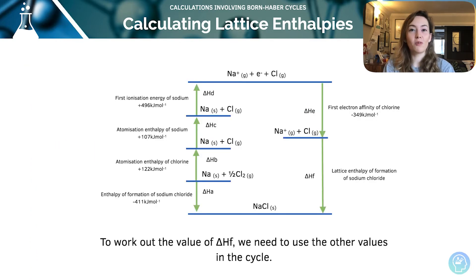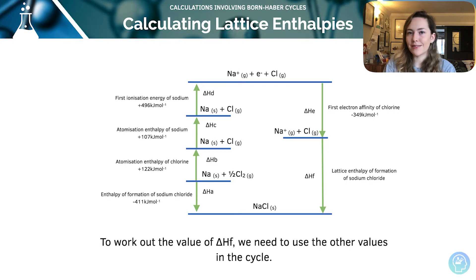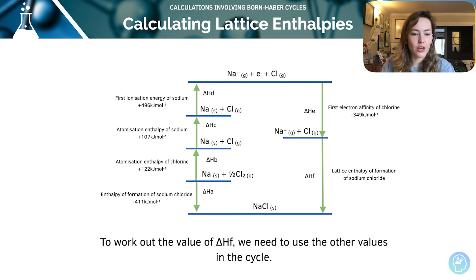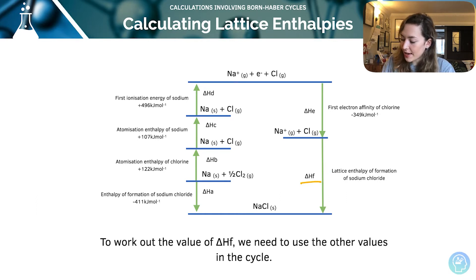Here we've got a Born-Haber cycle of sodium chloride and I've labelled all the routes. We can see we've got A, B, C, D, E, and F — each one of those represents an enthalpy change. To work out F, this one over here, we can use all of the other values to calculate the unknown.